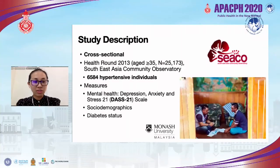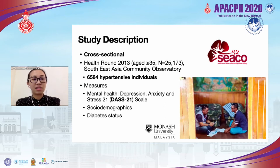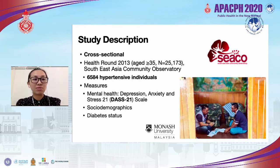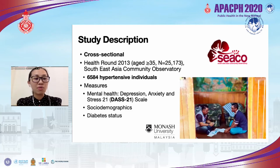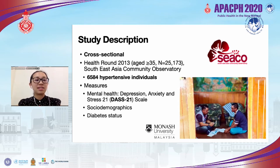Our study was cross-sectional, using data from the SICO Health Round 2013. Individuals aged 35 and above were included. Of the 25,000 individuals, 6,584 were hypertensive and included in this study. We measured mental health using the Depression, Anxiety, and Stress 21 scale (DASS-21), and collected data on social demographics and diabetes status.